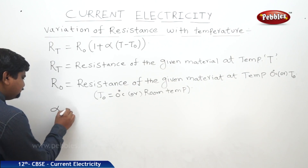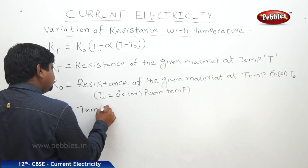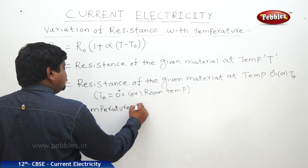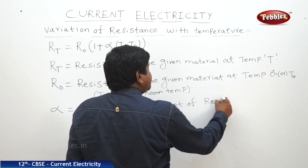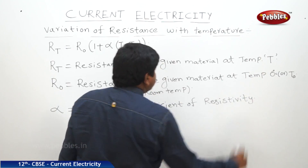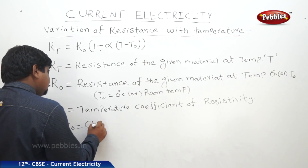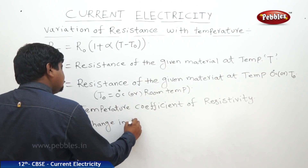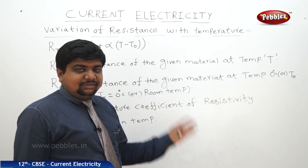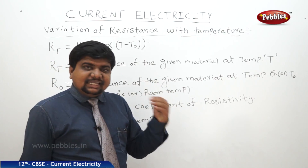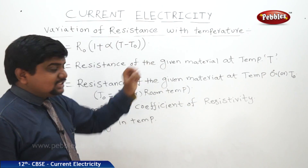Alpha (α) is the temperature coefficient of resistivity. The term (T − T₀) is nothing but the change in temperature. Some insulators have high resistivity compared to conductors. We will see what those insulators are and how their resistivity compares with conductors and other materials. This is the expression for the variation of resistance with temperature.